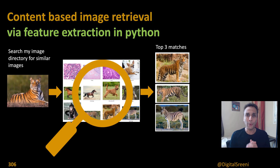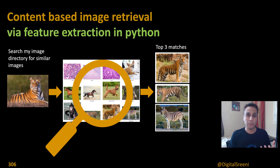Hello everyone, welcome back. In this video I am going to show you how easy it is to build your own content-based image retrieval system. Sounds too fancy, but all I'm trying to say is: you have an image and a directory of thousands of images, and you want to build a search engine that goes through all the images in your directory and matches the one you just provided. So it's basically image-based search. We're going to look at how you can build your own system — pretty simple, few lines of code. I'll show you four different ways of actually doing it.